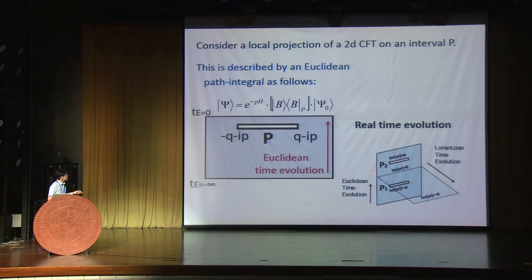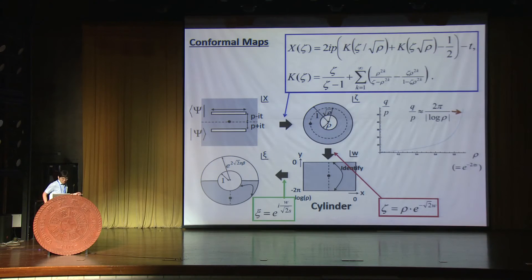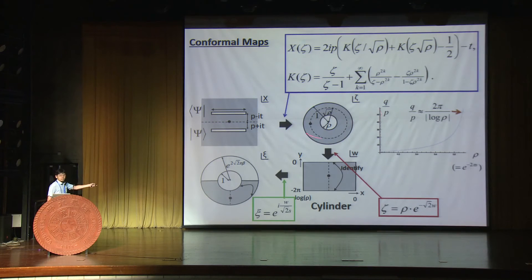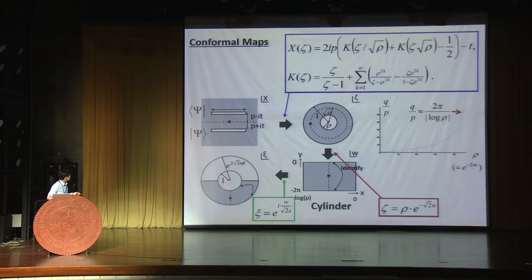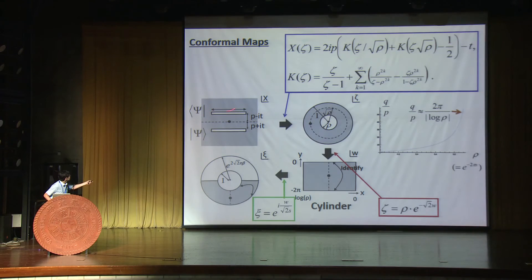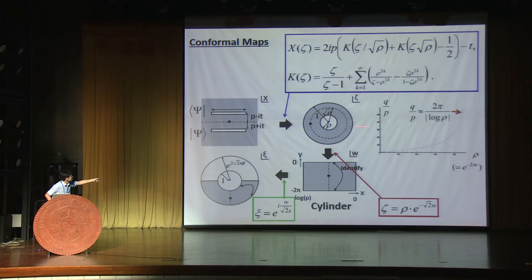We start with a vacuum state and path-integrate up to this point, then project down to the boundary state, with UV regularization parameter p. For real-time evolution we can do Lorentzian time evolution. To compute the density matrix we put one more copy — the bra state. The actual calculation deals with a geometry with two cuts, which we can map via a nice conformal map to an annulus. This exact map has an analytical formula in terms of theta functions. The key parameter is Q/p, where Q is the length of the interval and p is the UV regularization, related to the moduli of the annulus rho.